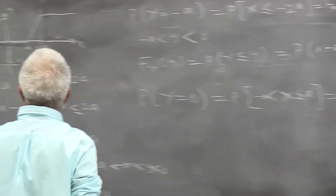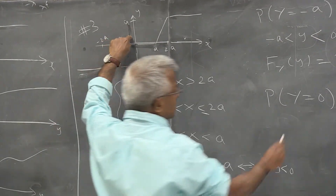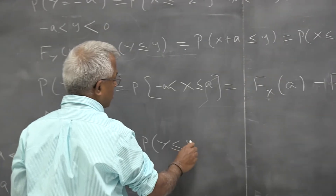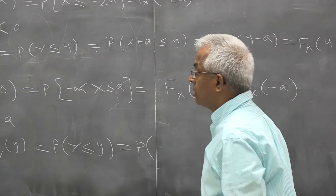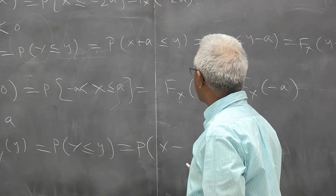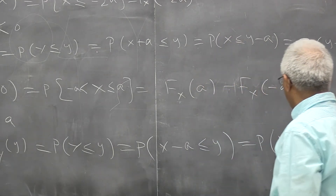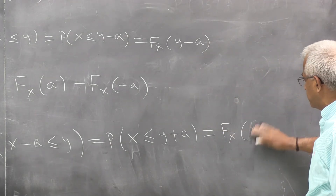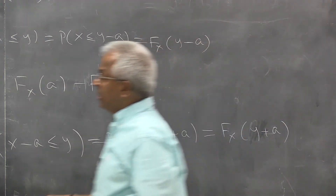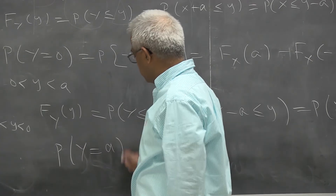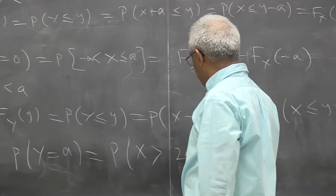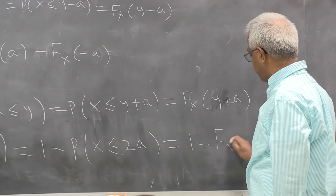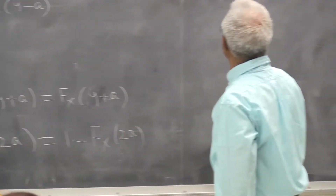And then when x is in the region where y is between zero and a, FY(y) is the probability of y less than or equal to y. But y is given to be x minus a, less than or equal to y, so this is the probability of x less than or equal to y plus a — the distribution function of x evaluated at y plus a. And finally, the probability of y equal to a is the probability of x greater than 2a, which is 1 minus FX(2a). So we can use this to draw the picture.